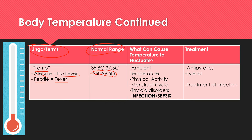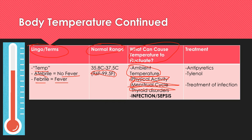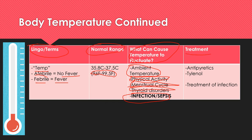What can cause temperature to fluctuate? Ambient temperature, physical activity, menstrual cycles, thyroid disorders, and — the biggest one — infections or sepsis. When someone is getting sick, a rising temperature is often the telltale sign. Treatment includes antipyretics like Tylenol or Toradol, which will bring the temperature down, but remember these only treat the symptom.